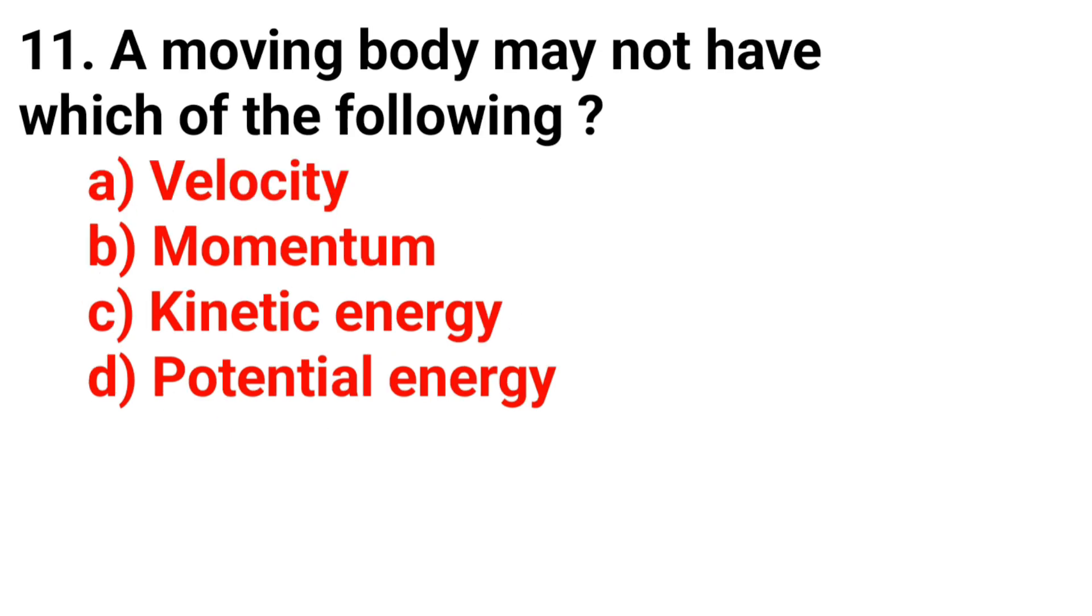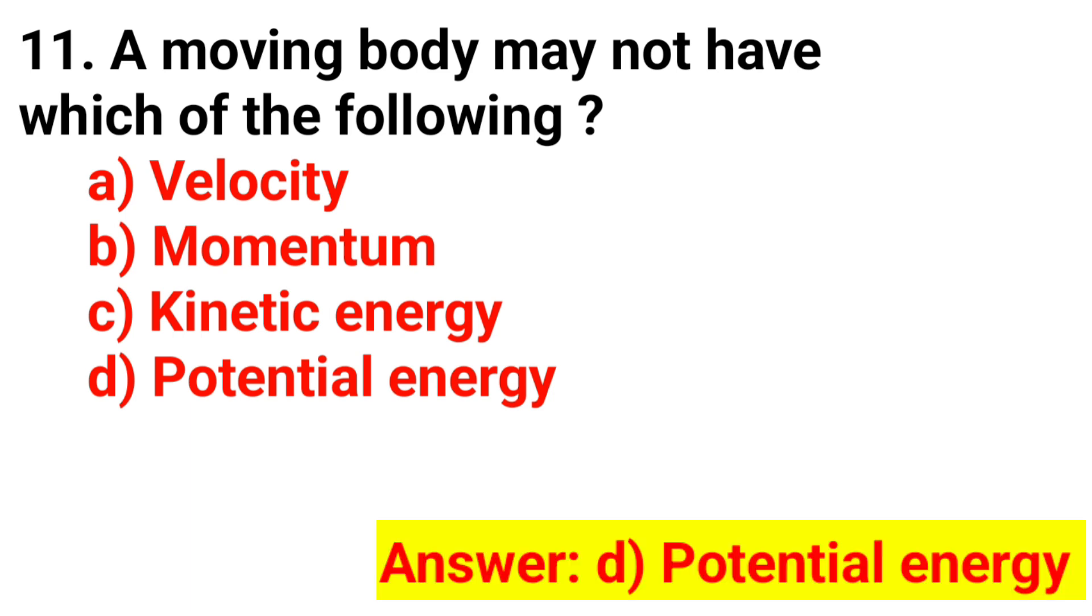Question 11. A moving body may not have which of the following? The answer is option D, potential energy.